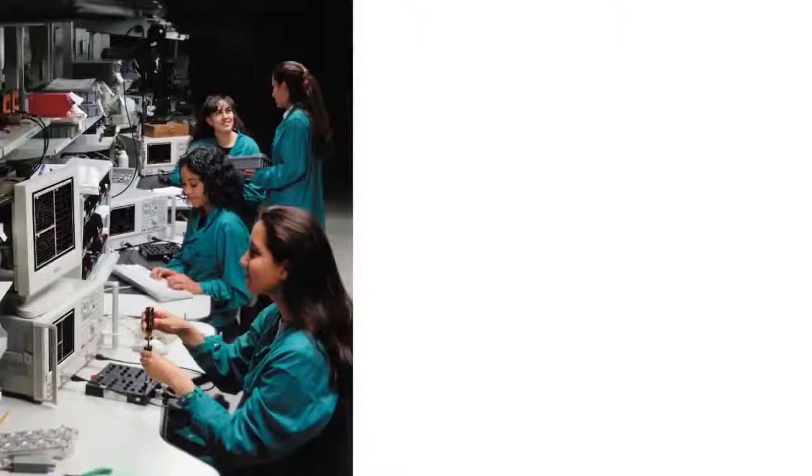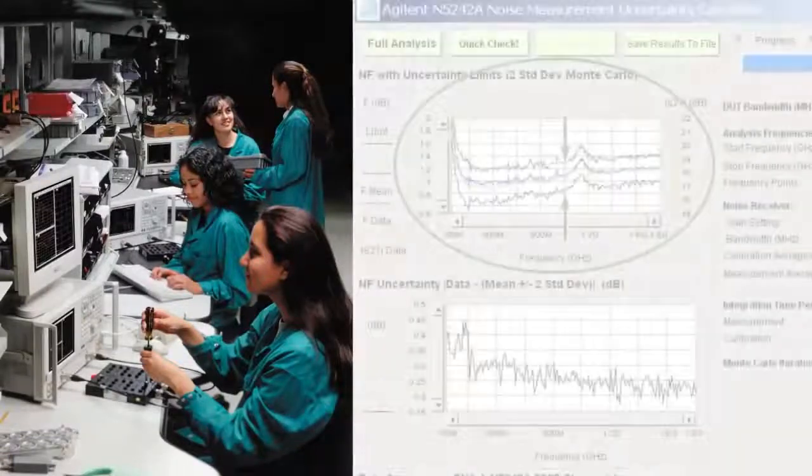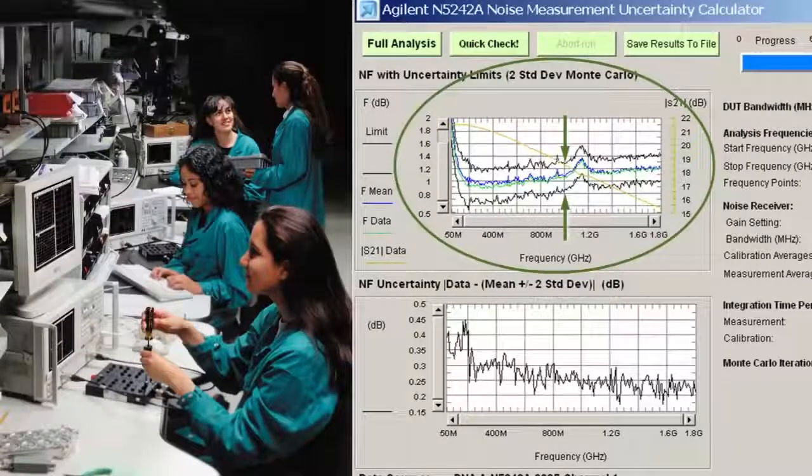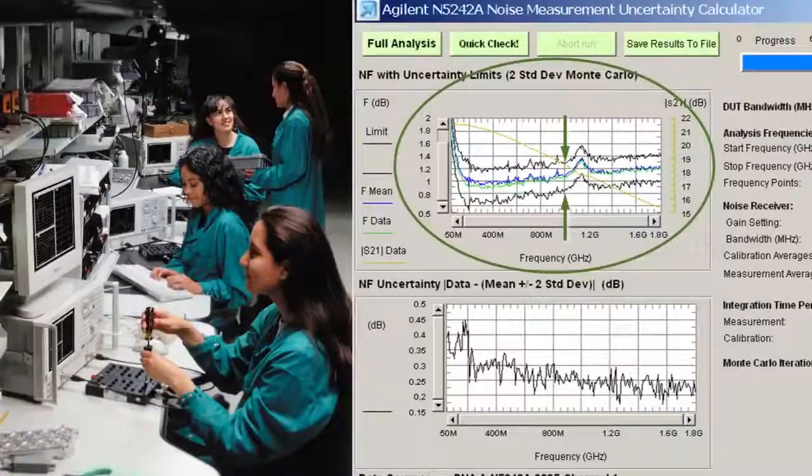In manufacturing, higher accuracy provides better correlation among test stations. This results in less rework and lower cost of test. And higher accuracy reduces measurement uncertainty guard bands, resulting in more competitive products with better specifications.